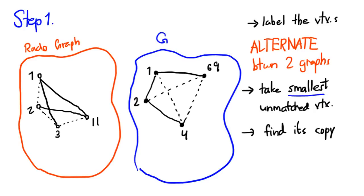Thus, we have constructed the bijection which also preserves edges. Therefore, we have shown that G and the Rado graph are the same graph. This completes our proof for step 1.